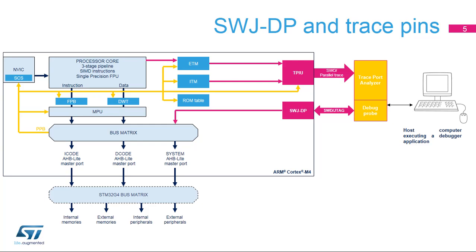The SWJDP supports two protocols to exchange data with the debug probe: either the two-wire serial wire debug, or SWD protocol, or the five-wire JTAG protocol. The SWJDP automatically detects which protocol is used.